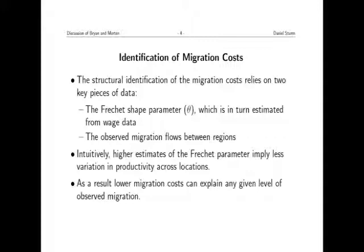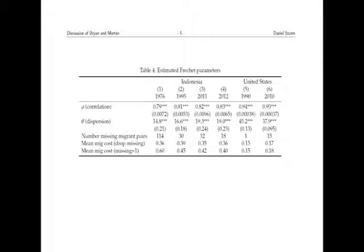If we have a low theta—a low shape parameter—so there's huge heterogeneity in opportunities, and we see small migration flows, we're going to infer there must be very high costs preventing people from taking those opportunities. The estimates of this critical theta parameter show that for Indonesia, the theta parameter slightly increases over time, which would mean that heterogeneity in opportunities slightly declines over time. There's a huge difference between Indonesia and the United States: the estimates suggest that heterogeneity in employment opportunities across different states in the U.S. is much smaller.